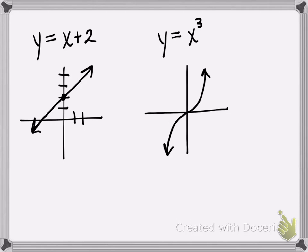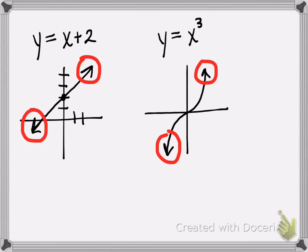You'll notice that the end behavior for both of these polynomial functions is the same — the ends are pointing in opposite directions. The first was degree 1, a linear function, and the second was degree 3. So these odd-degree polynomial functions are going to have the ends of the graph pointing in opposite directions.